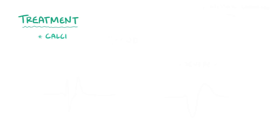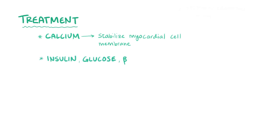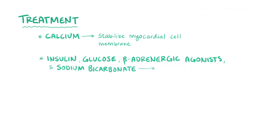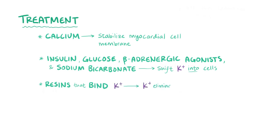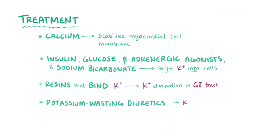With severe hyperkalemia, treatment may include using calcium to stabilize the myocardial cell membrane, using insulin, glucose, beta-adrenergic agonists, and sodium bicarbonate to shift potassium into the intracellular space, using resins that bind potassium to promote its elimination in the gastrointestinal tract, using potassium-wasting diuretics to promote potassium elimination in the kidneys, and in severe cases, dialysis.